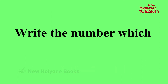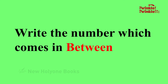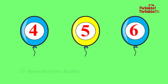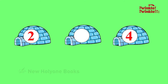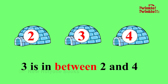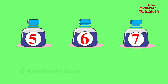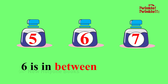Write the number which comes in between. 5 — 5 is in between 4 and 6. 3 — 3 is in between 2 and 4. 6 — 6 is in between 5 and 7.